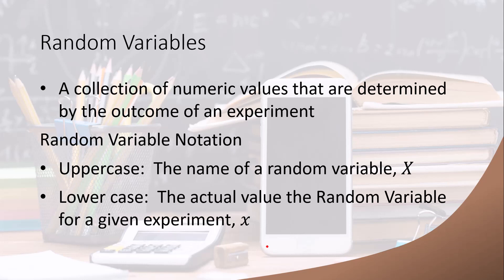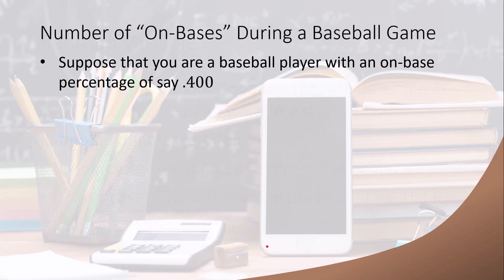Let's apply this to an example. Suppose that you are a member of Limestone's baseball team and you know your on-base percentage. Let's suppose your on-base percentage is 0.400. That means that for every appearance at the plate, the probability of getting on-base is equal to 0.4. The only other option — the probability of not getting on-base — is 1 minus p, which equals 0.6.